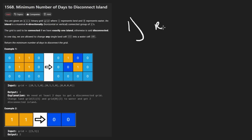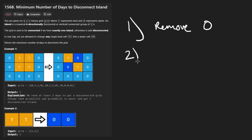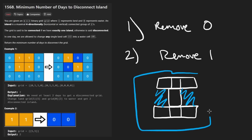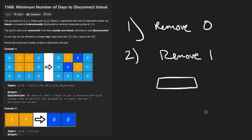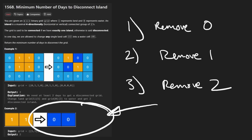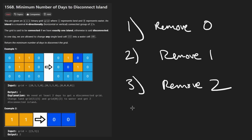Zero removals applies when you start with multiple islands or zero islands already. The second case is one removal - suppose you have a one-by-three island, another one-by-three island, and one block connecting them; just delete that one node and you have two islands. The third case is two removals to reach multiple islands or zero islands.